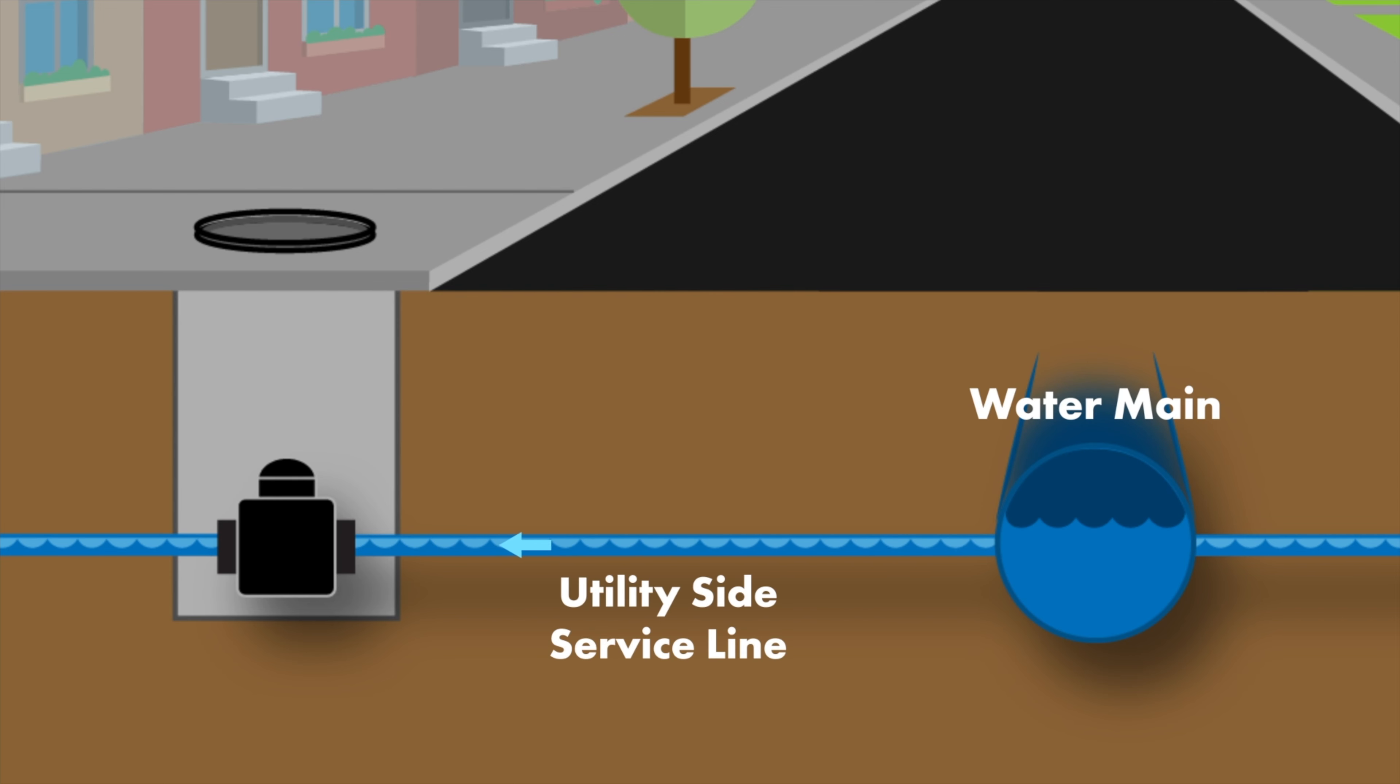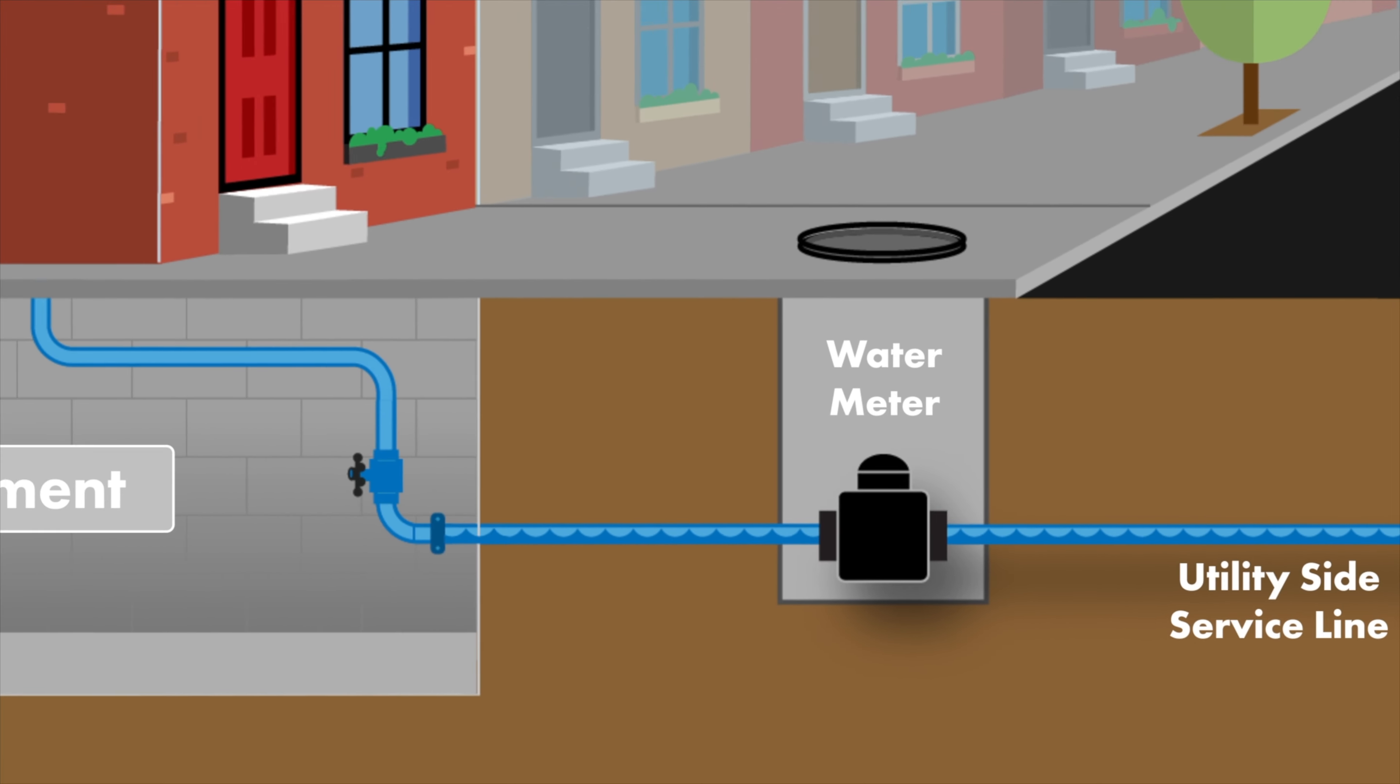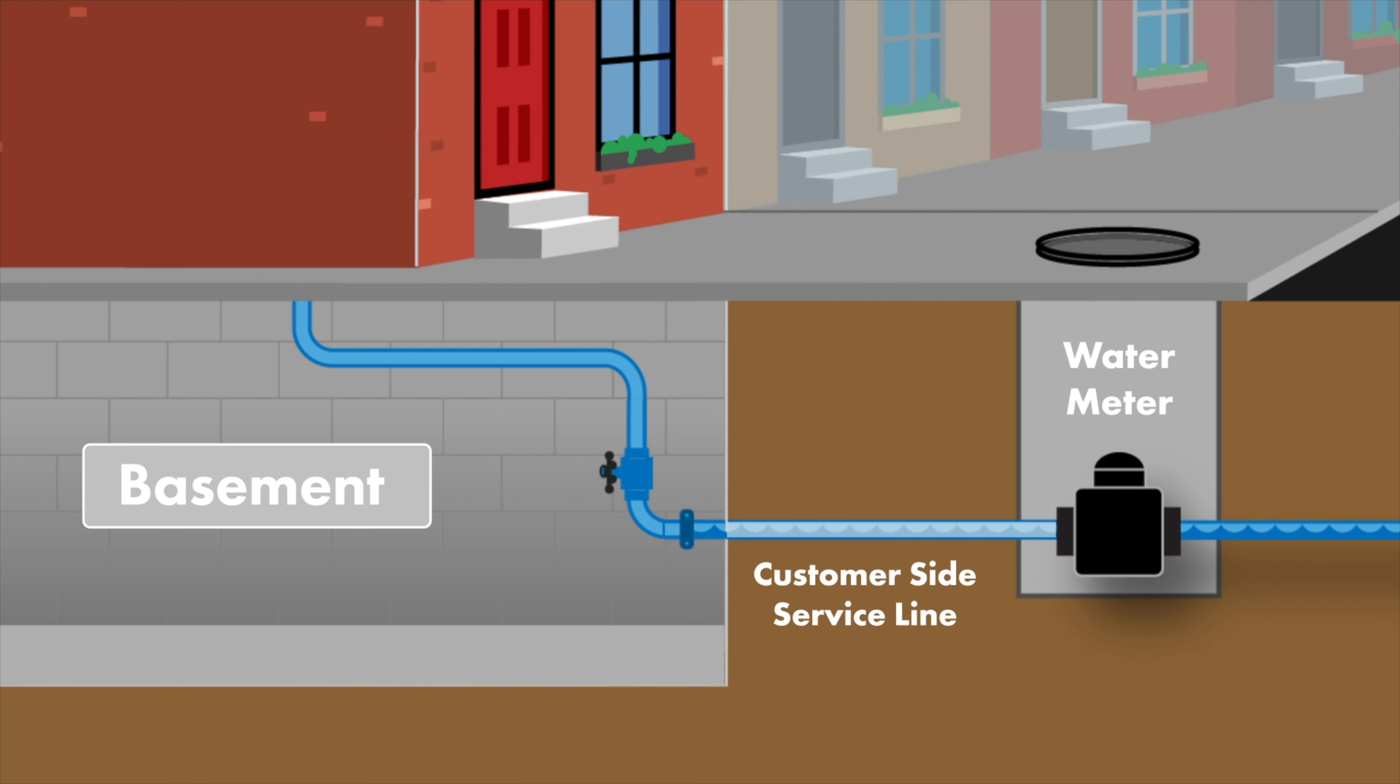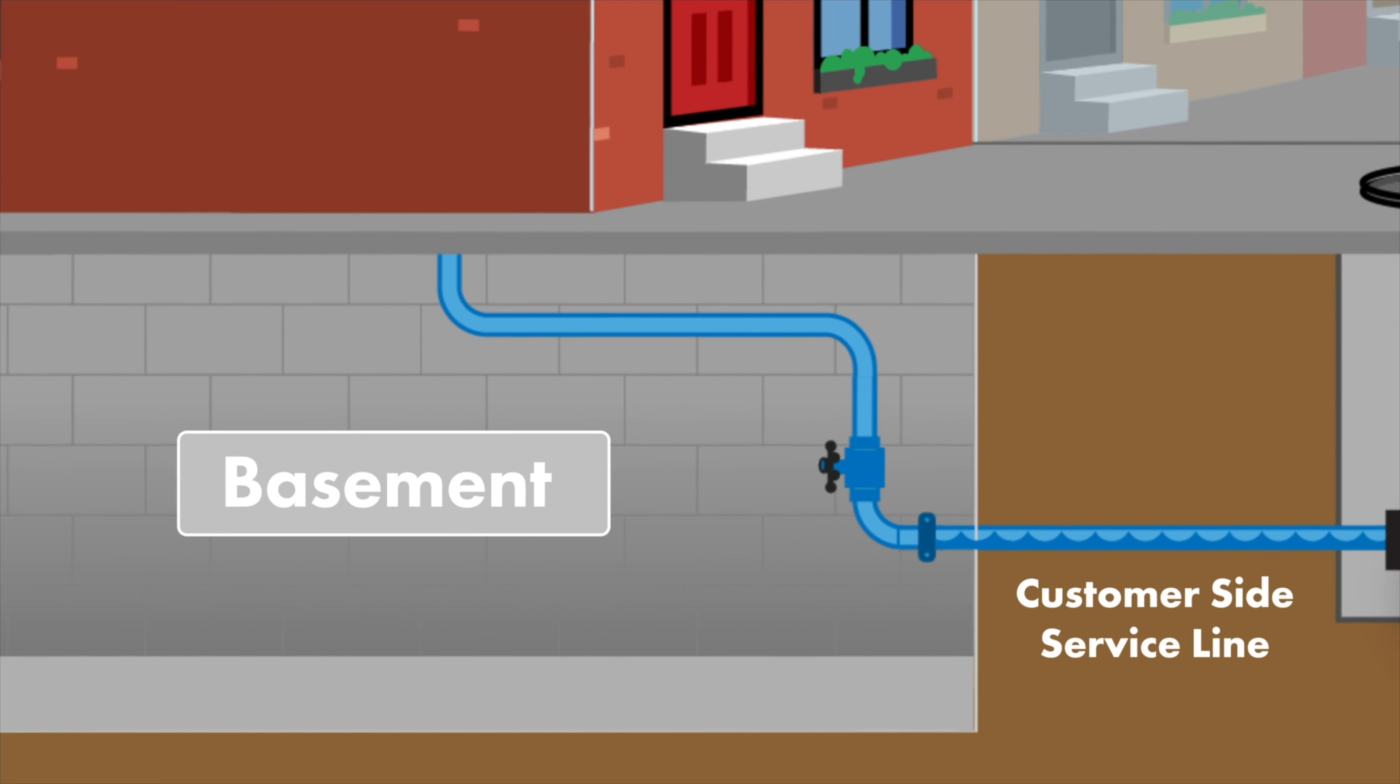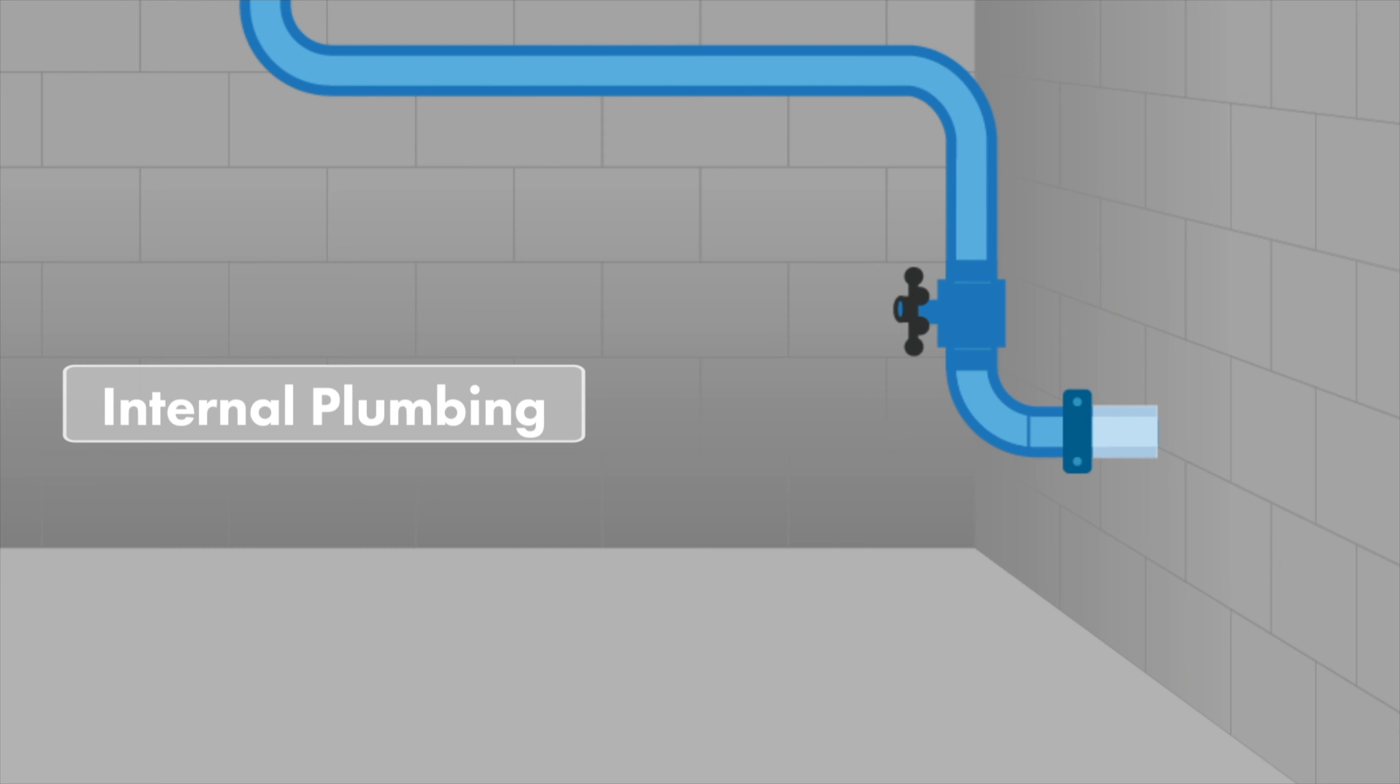Usually, the service line can be found where it enters your home through the foundation wall in the basement or utility area. There may be other utility pipes near the water service, but the water service line is typically less than one inch in diameter and has a shutoff valve near the entry point.